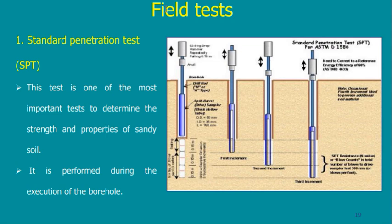Suppose you start blowing — 1, 2, 3, 4, 5 — and you reach 50 blows without achieving 15 cm of penetration at any stage. In this case the soil has reached refusal. You either report the N-value as R for refusal, or you give the number with a maximum cap of 50, meaning the N-value should not exceed 50.